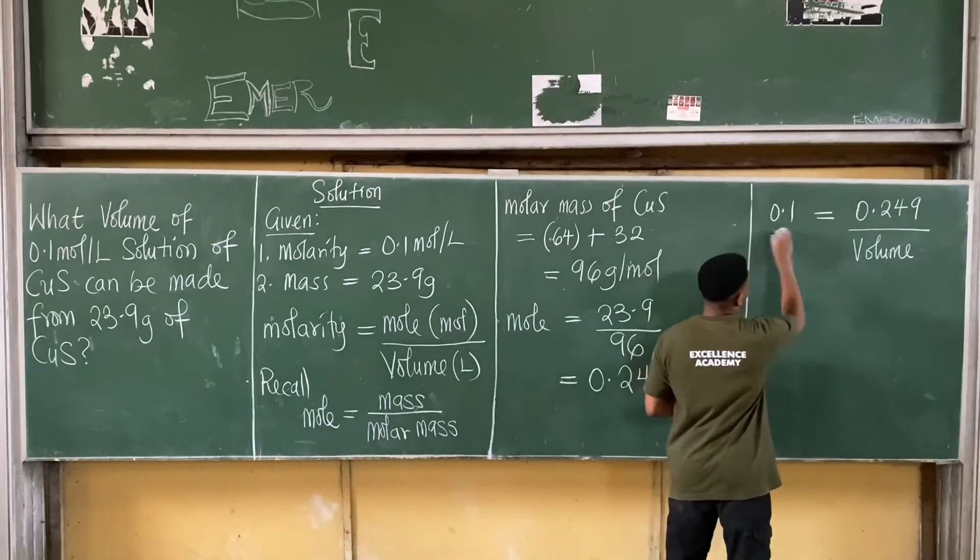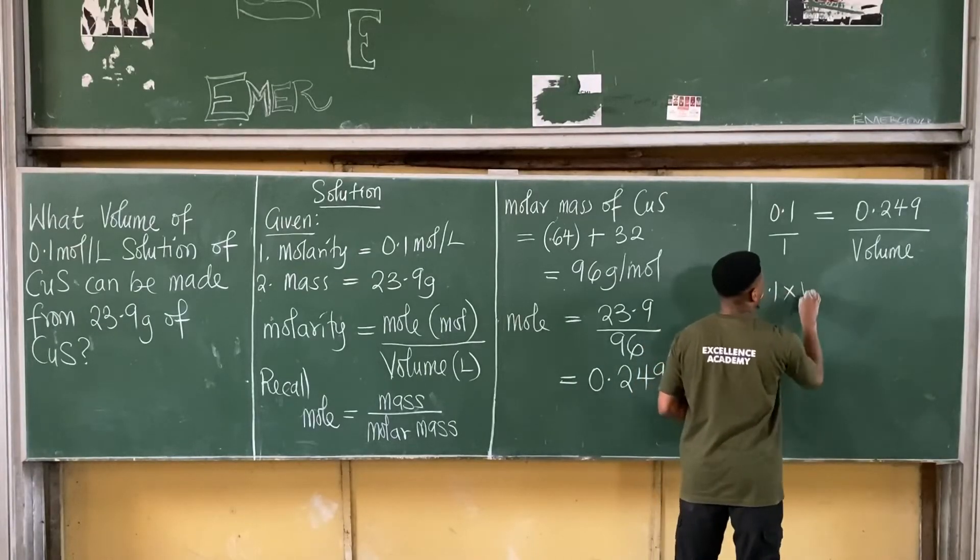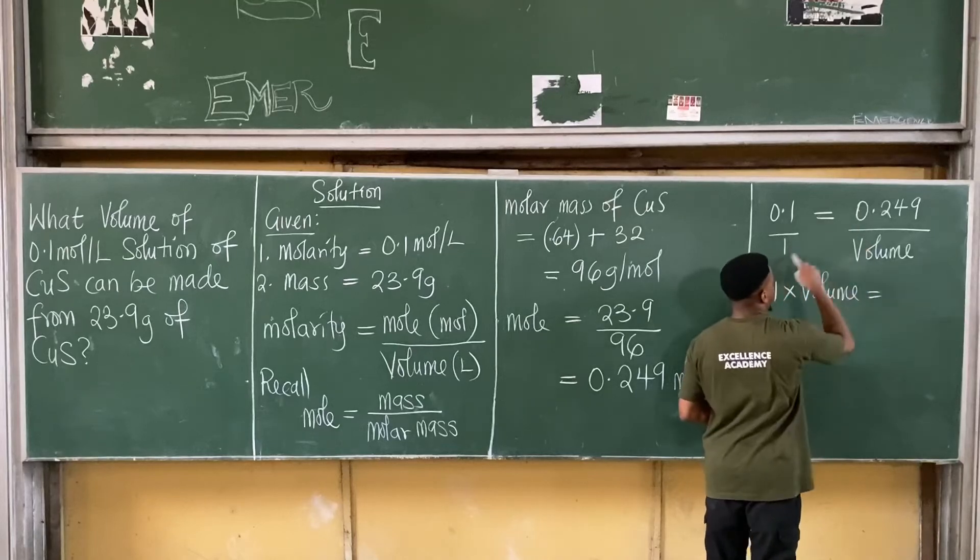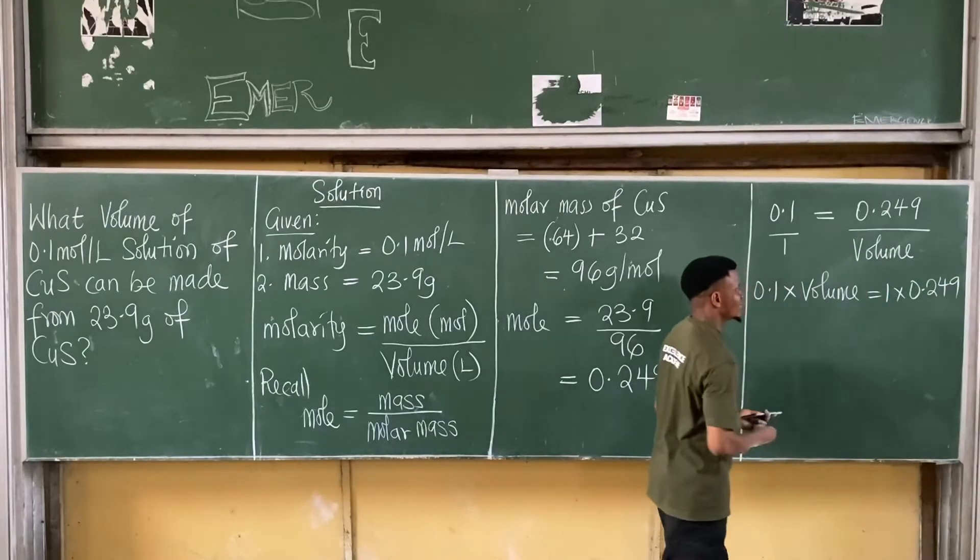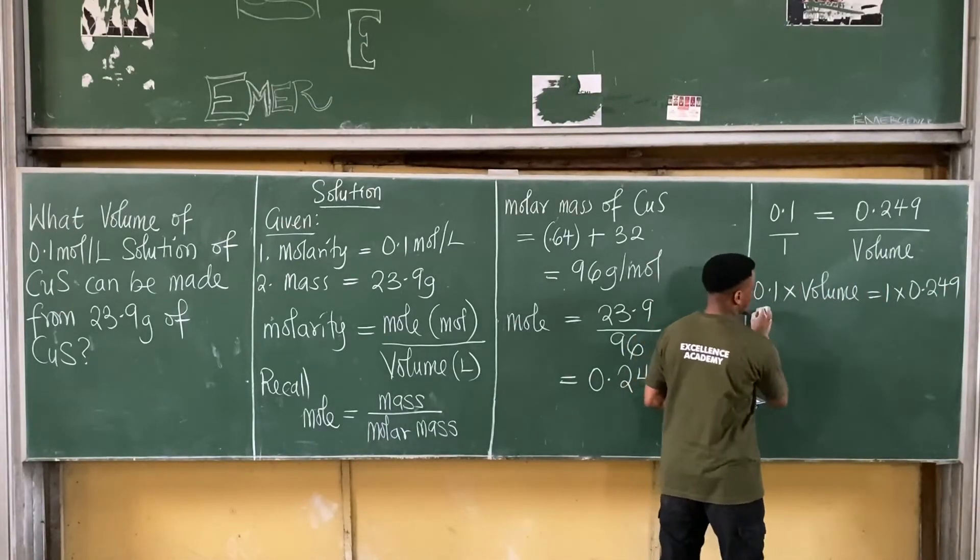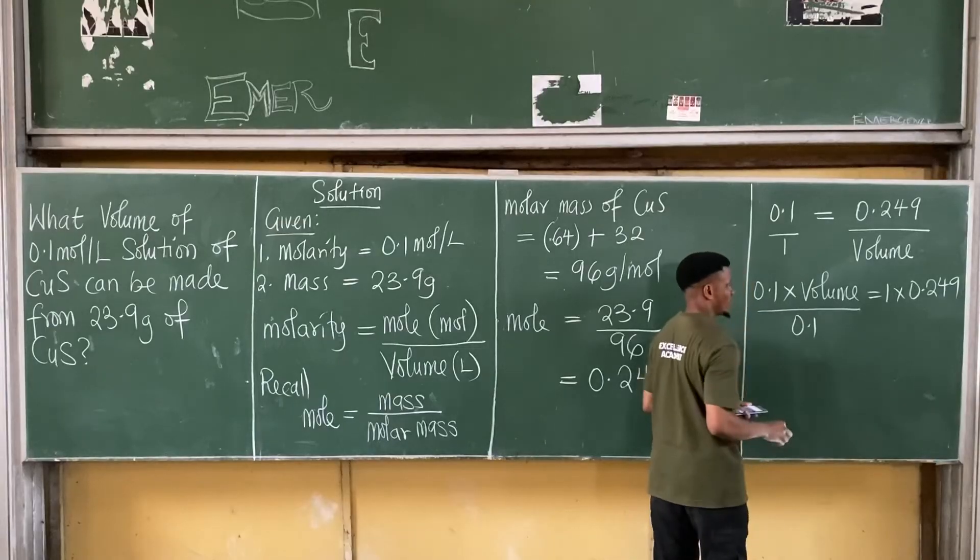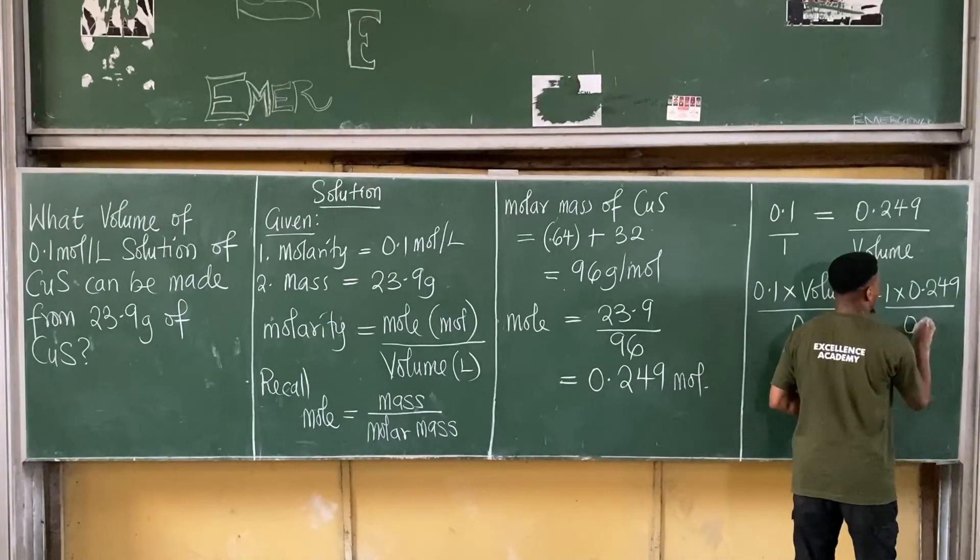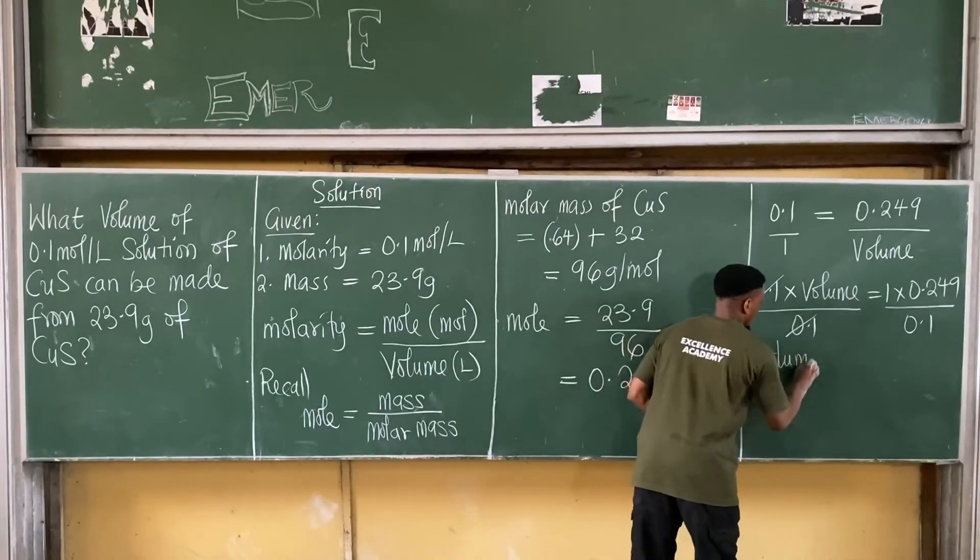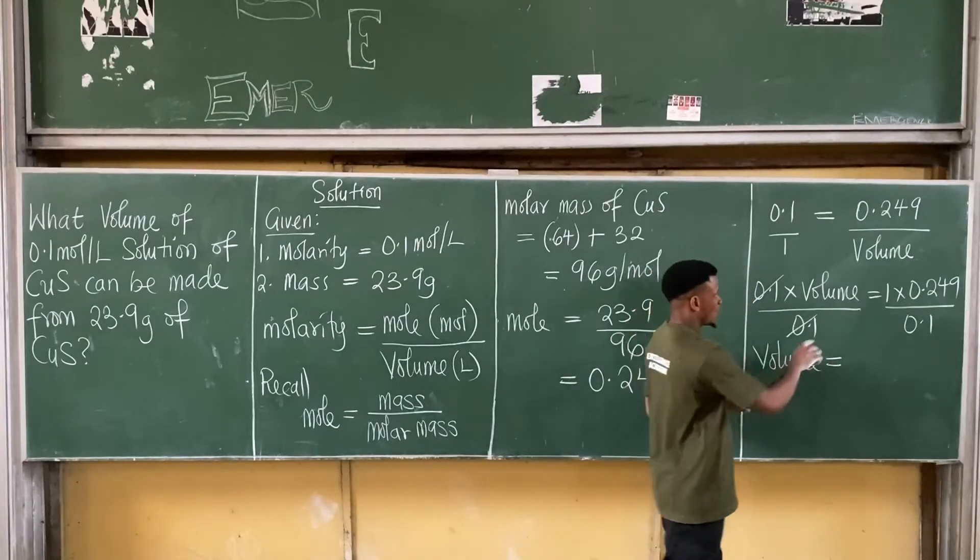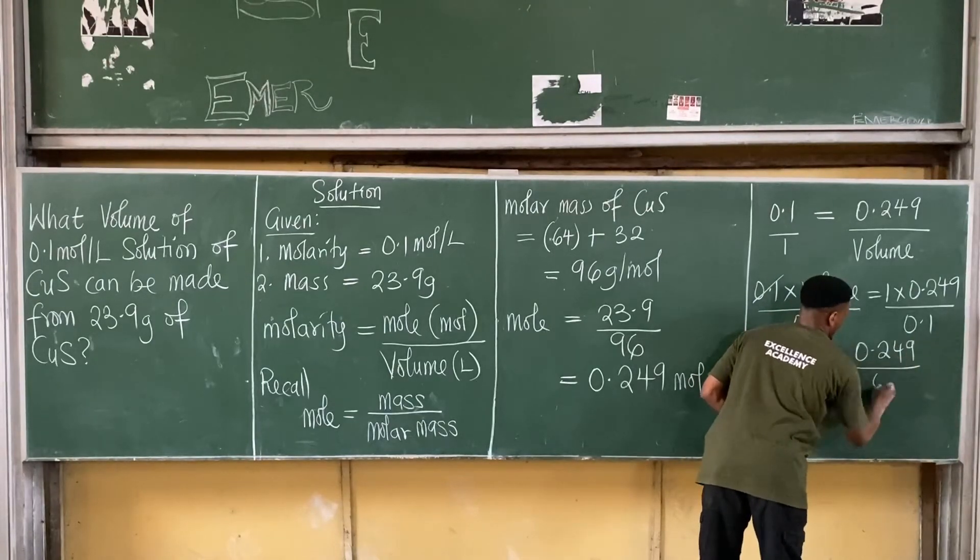So it's all over 1. So I have this times this, 0.1 times volume is equal to this times this, 1 times 0.249. I have this. To get the value of the volume, I'll have to divide this by everything attached to the volume, which is 0.1. So it becomes all over 0.1. From here, this cancels this.